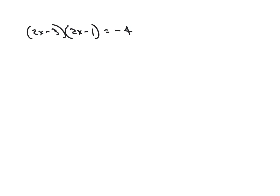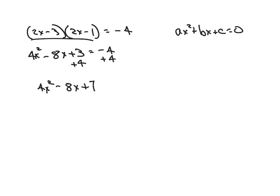So in order to do this, we have to have it in this form. There's no exceptions to that. So what we're going to do is we're going to do the FOIL method for that. And we end up with 4x squared minus 8x plus 3 equals negative 4. So we're almost there. We have to add 4 to both sides. So 4x squared minus 8x plus 7 equals 0.